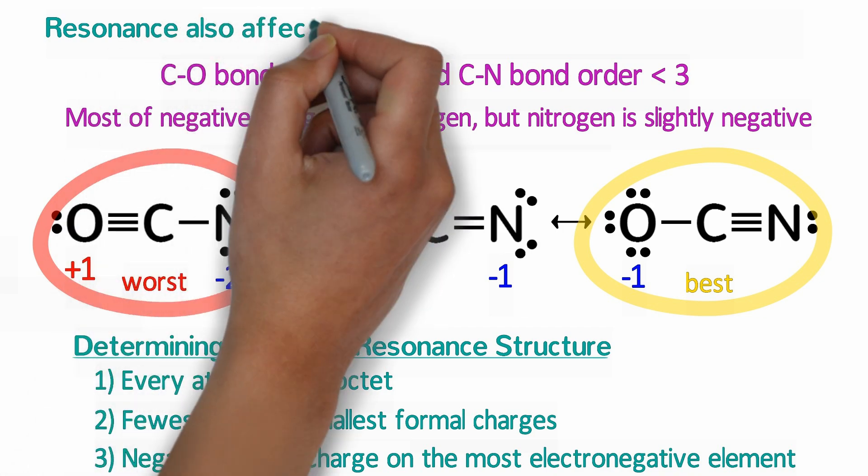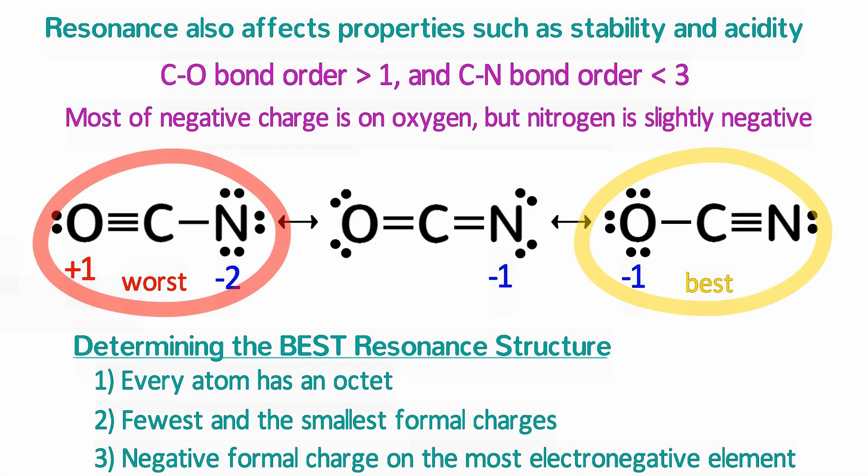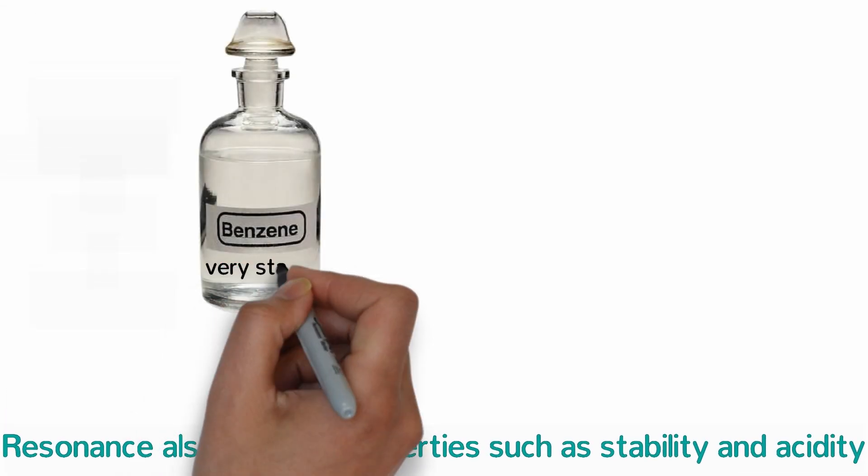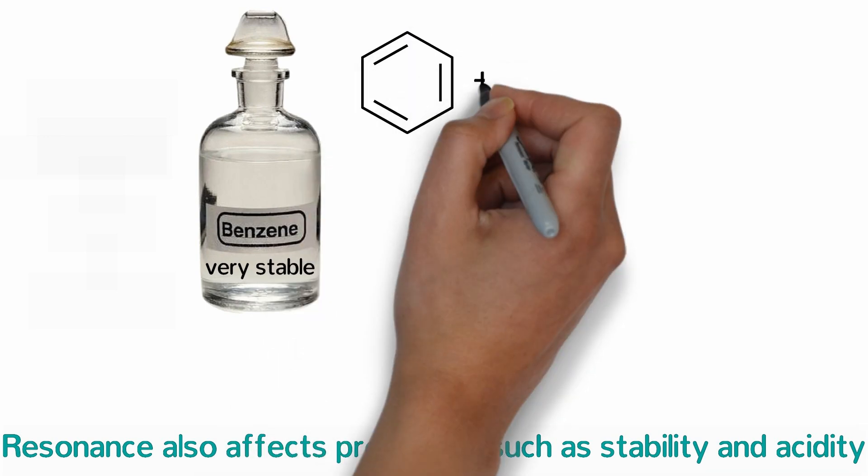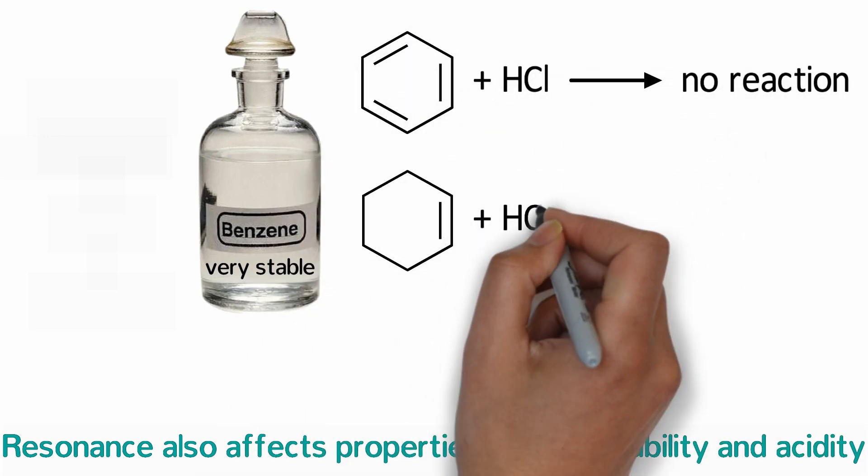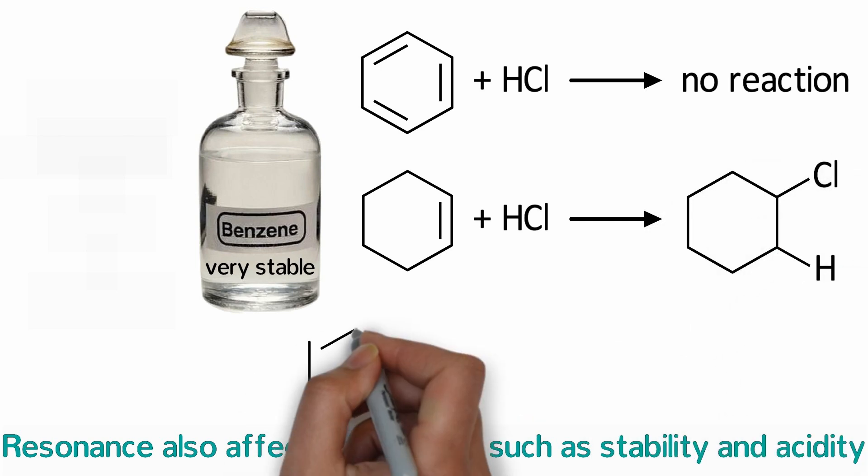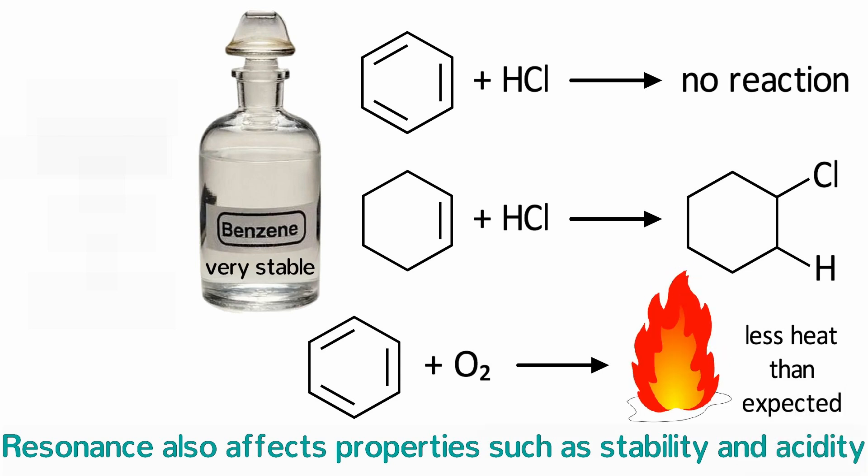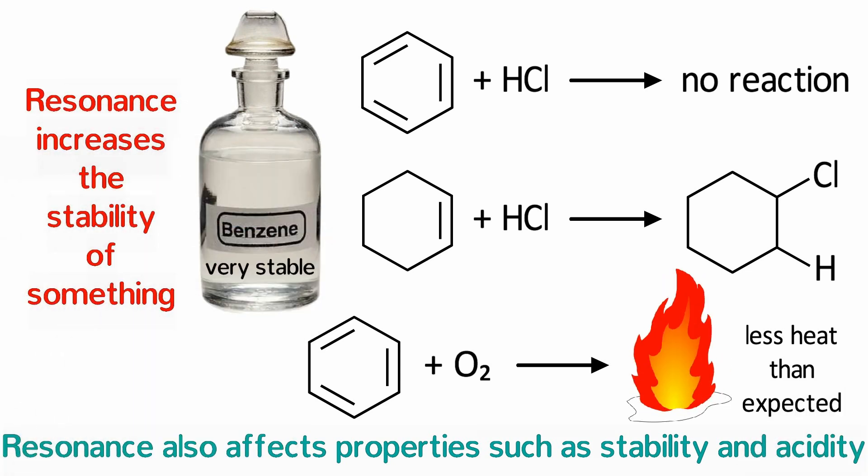Resonance is also able to significantly affect other properties such as stability and acidity. Looking back at the example of benzene, it is much more stable than other hydrocarbons with double bonds. That means that benzene doesn't react with strong acids like hydrochloric acid, while other alkenes do react with hydrochloric acid. It also means that benzene gives off less heat than expected when it burns. This is often true. Resonance usually increases the stability of something.